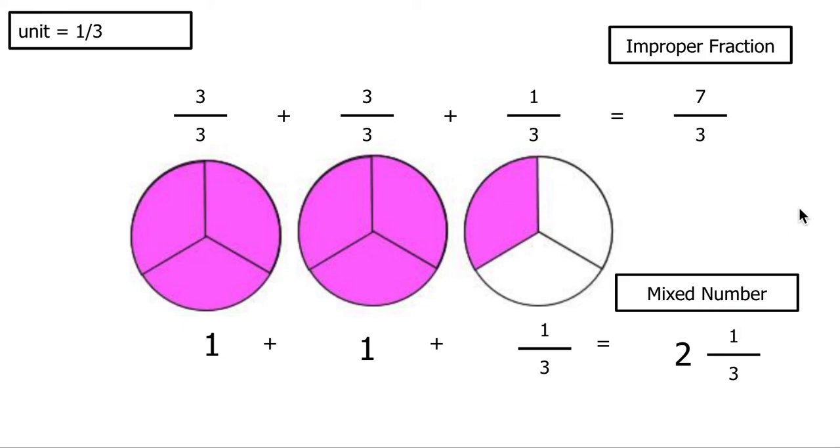So our improper fraction is 7 thirds. Our mixed number is 2 and 1 third. Don't forget to always use your unit fraction to help you with the denominator.